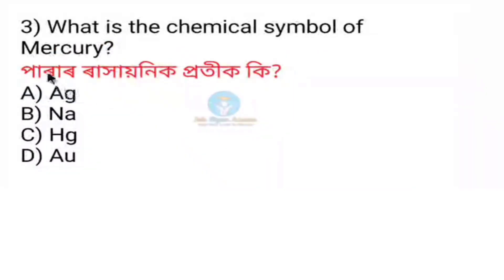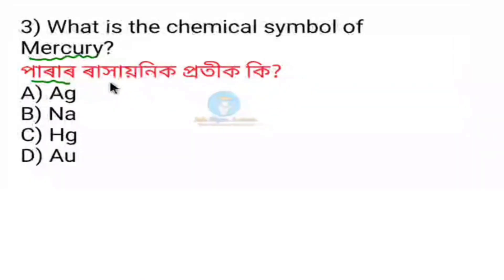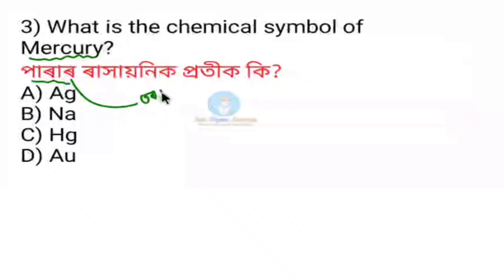What is the chemical symbol of mercury? Mercury is a liquid metal that is called mercury.